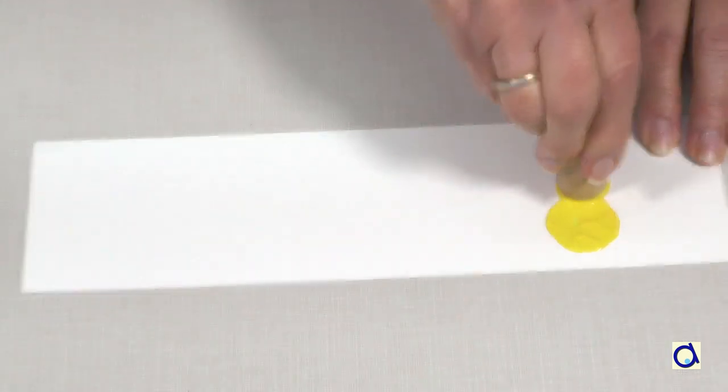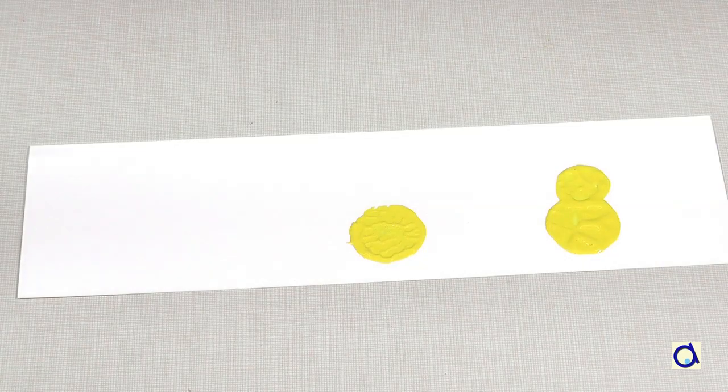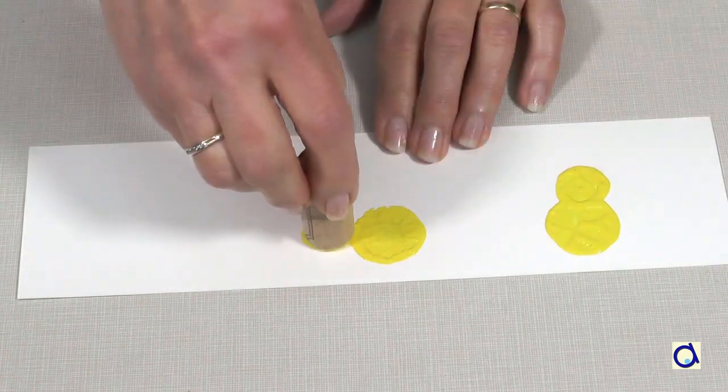Take a champagne cork and make an impression to represent the chick's body, and then with a wine cork, make a smaller impression to represent the chick's head.